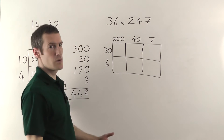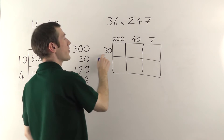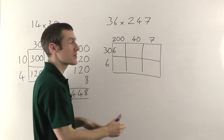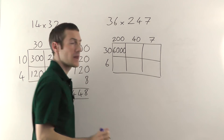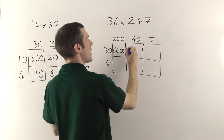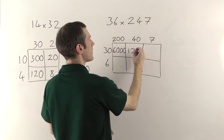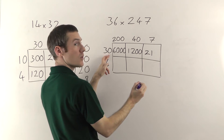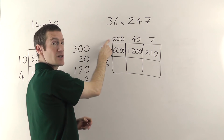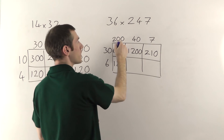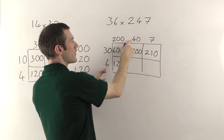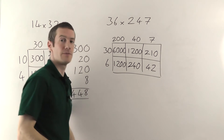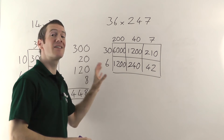So 30 times 200 — that's a lot of zeros, just ignore them all. 3 times 2 is 6, then count how many zeros you've got: one here, two zeros here, that's three zeros altogether, so you add three zeros on the end. Easy peasy. 30 times 40: three fours are 12, and I need to add two zeros. 30 times 7: three sevens are 21, plus one zero. Then we do the bottom row. 6 times 200: two sixes are 12, plus two zeros. 6 times 40: 6 times 4 is 24, plus one zero. And 6 times 7 is 42. So that's my grid filled out — nothing very complicated there.